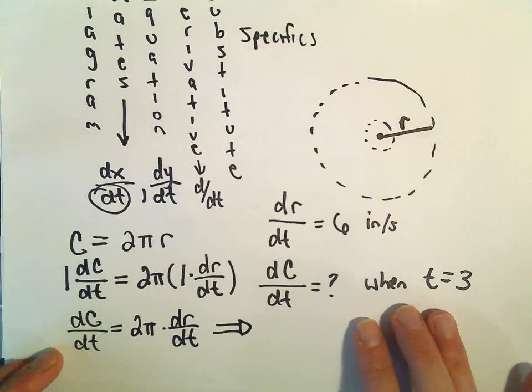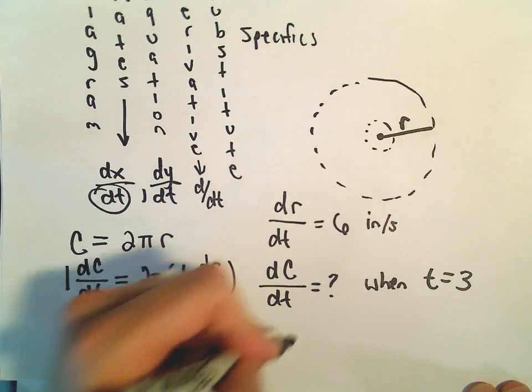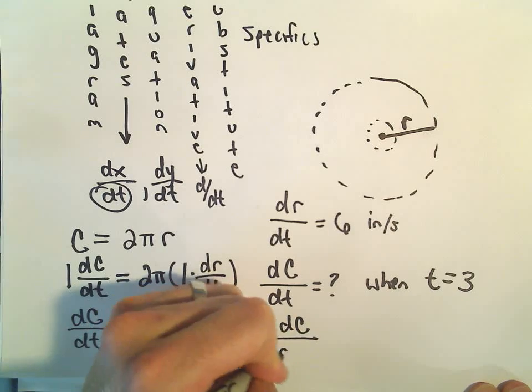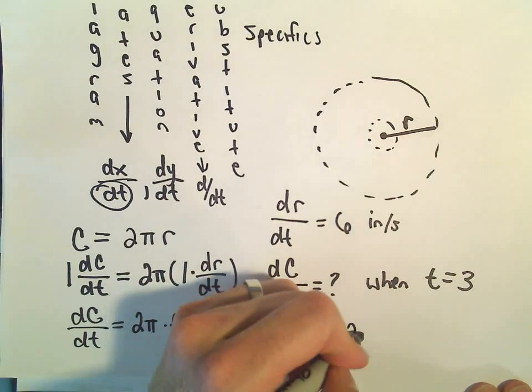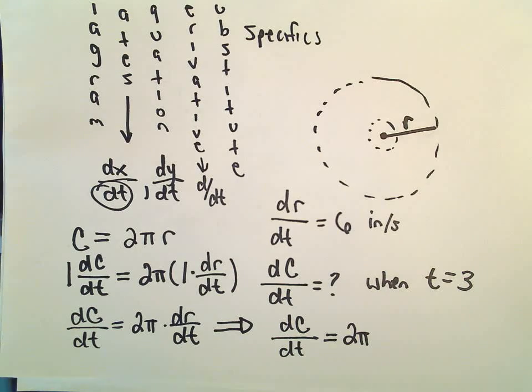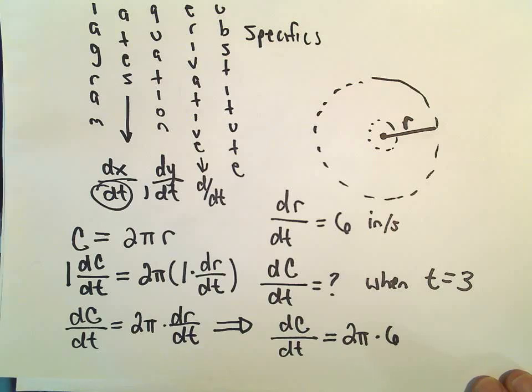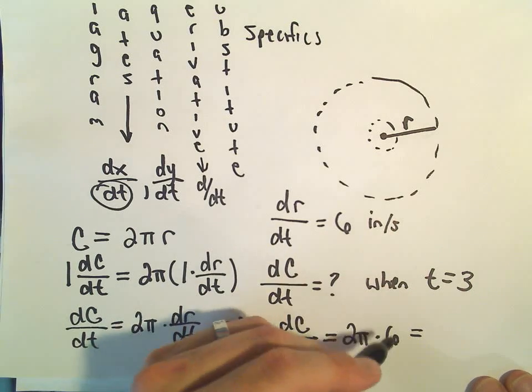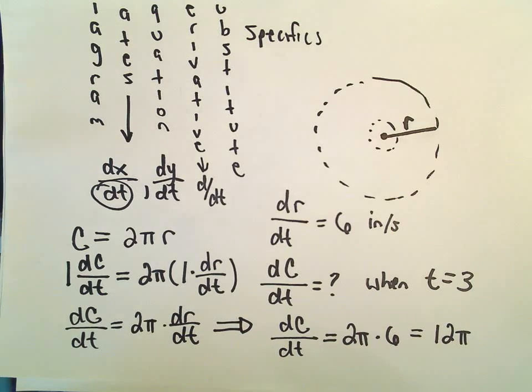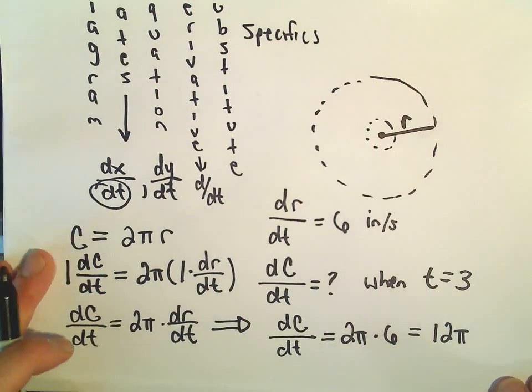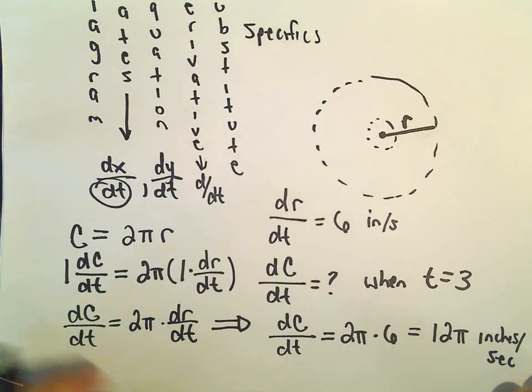So sometimes, what I'm trying to say, sometimes you may even get information that's not needed to plug in. But in this case, we can say that dc, the change in circumference with respect to time, that's going to be 2π. dr/dt, we're given that to be 6. So if you multiply 6 times 2π, that'll give us 12π. And so it says the circumference is increasing at a rate of 12π inches per second.